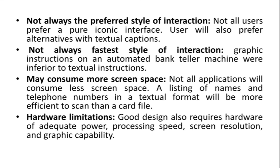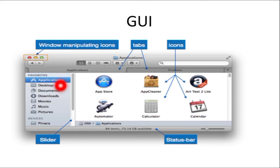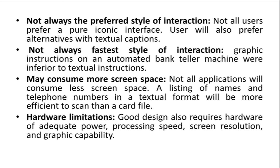Another disadvantage is that GUI may consume more screen space. A listing of names and telephone numbers in a textual format is more efficient to scan than a graphical card file. If you want to include 100 choices in a menu, you don't have sufficient screen space for all of them. You can't include all the choices because of the lack of space, so that is the disadvantage — GUI may consume more screen space.